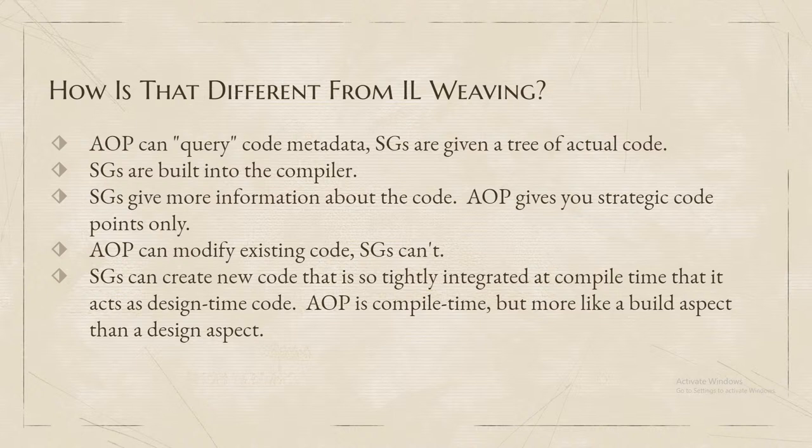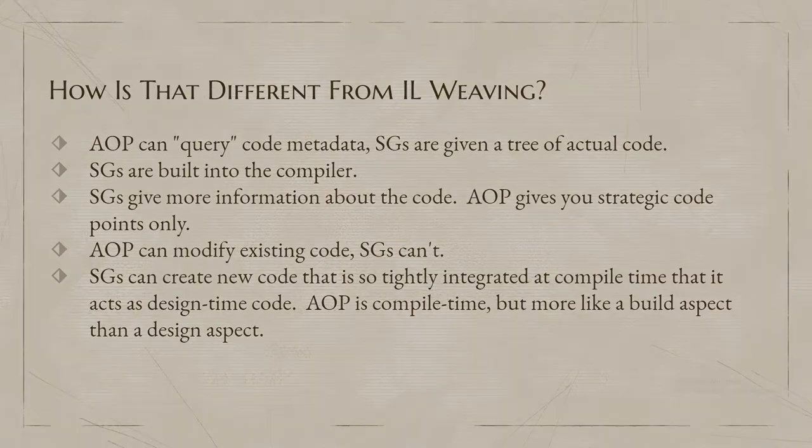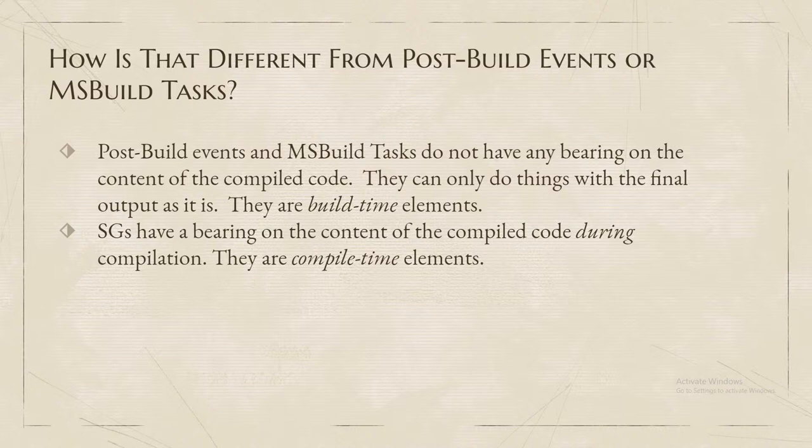How is that different from IL weaving? AOP is where you take source and an aspect and glue them together with a tool to take the output of the compiler — the IL — and stick the stuff that the aspect and source designate into the already-produced IL. Source generators execute before the IL is output — that's a primary difference. The other, as I mentioned, is that AOP can modify existing code and source generators cannot. And that's the distinction between build-time events versus compile-time elements.